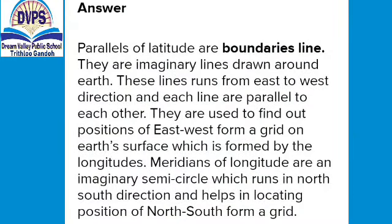इसका जवाब है: Parallels of Latitude boundary lines होते हैं। ये क्या होते हैं? ये imaginary lines होते हैं — ख्याली lines — drawn around Earth, पूरे Earth के गिर्द खींची जाती हैं। These lines run from east to west direction — मश्रिक से मगरिब की तरफ — और हर एक line एक दूसरे के parallel होती है।